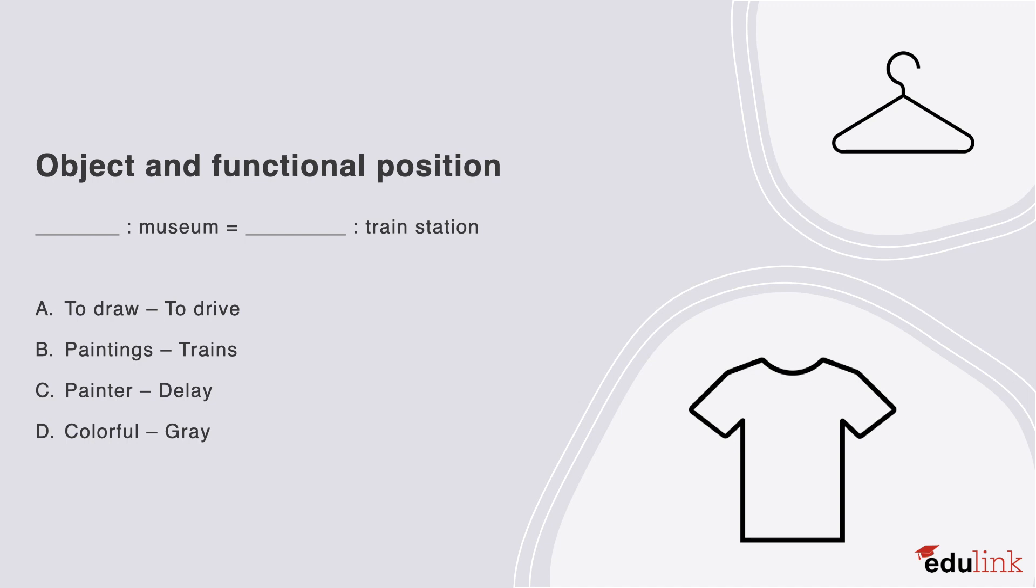The next question is about object and functional position. Consider all options. The correct answer is B. Paintings have a functional position in a museum, and trains have a functional position at a train station.